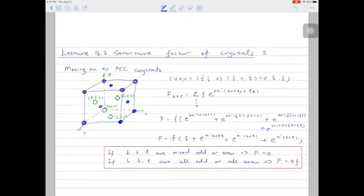Looking at some examples, starting by looking at 001 planes. 0 is generally regarded as an even number, so what we have here is a mixed odd and even numbers. The structure factor is equal to 0, and the 001 spots will be invisible in FCC crystals assuming kinematic scattering.